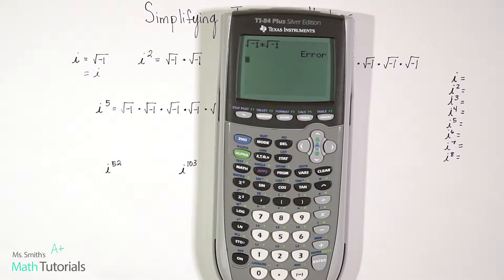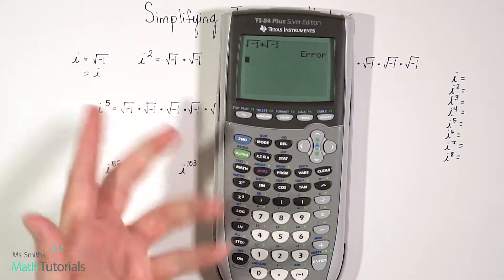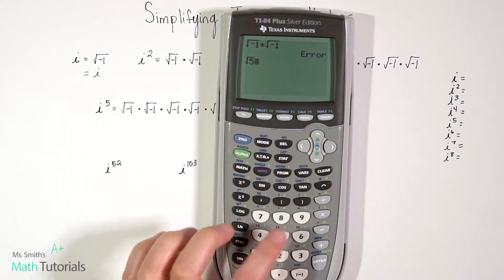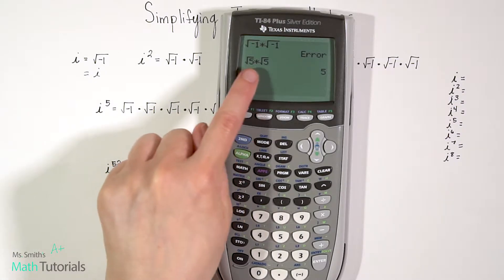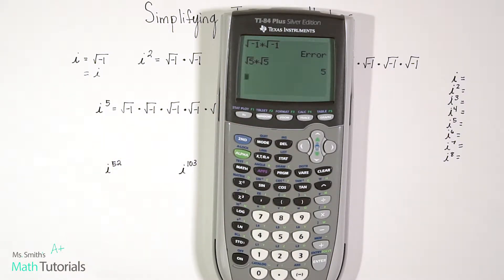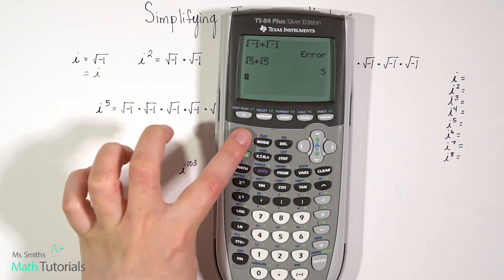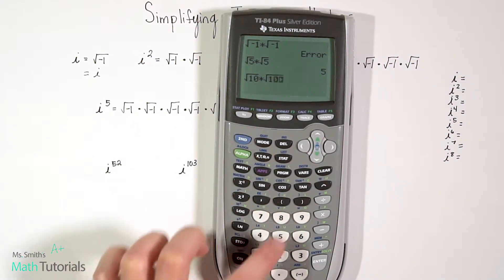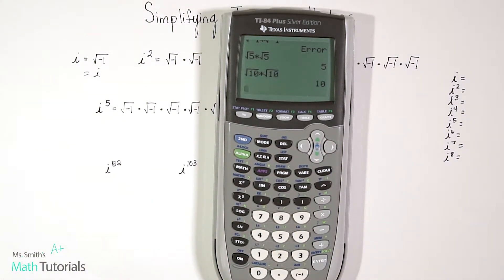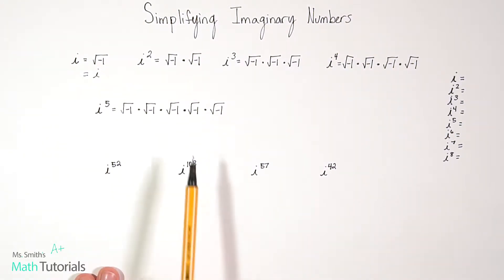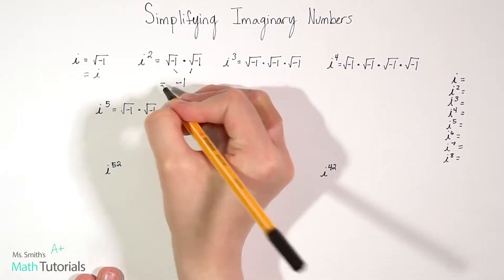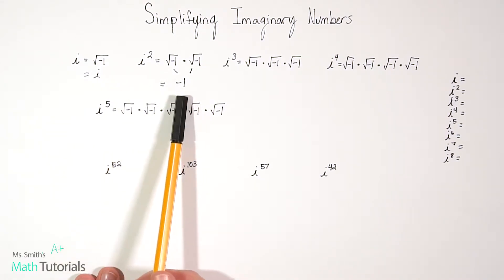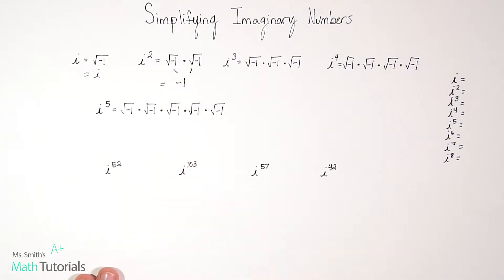To show you what's actually happening, instead of using the square root of a negative number, I'm going to use a regular number — like five. So the square root of five times the square root of five gives us five. That tells us that when we multiply the square root of a number by the square root of that same number, we're just left with that number. So when I take the square root of negative one times the square root of negative one, I get negative one. So i squared is just negative one.